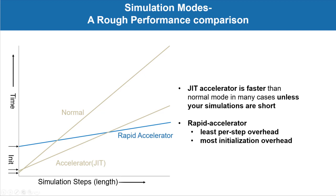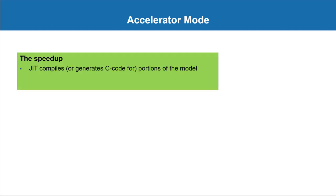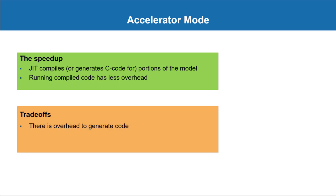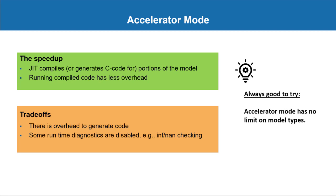In accelerator mode, a just-in-time compiler generates code for portions of the model, resulting in less runtime overhead when the model runs. However, generating that code has its own overhead, and runtime diagnostics like inf and nan checking are disabled. A pro tip: since there is no limitation on model types that run in this mode, it's always a good idea to run your model in accelerator mode for improved simulation speeds.